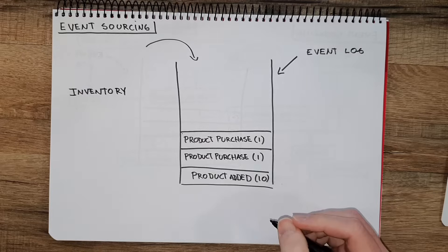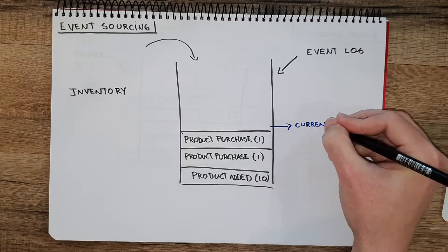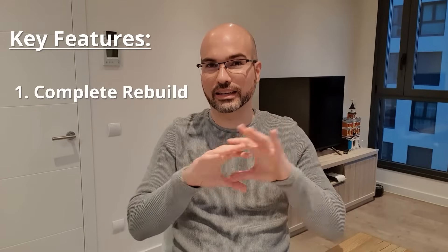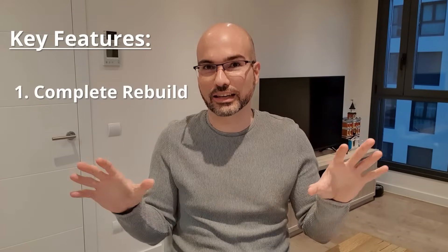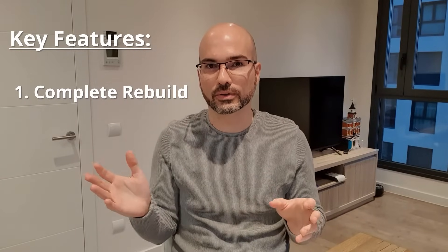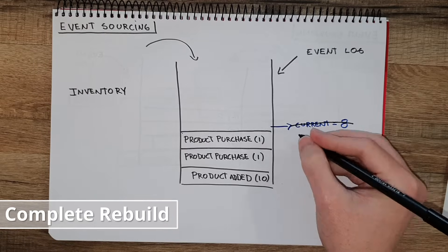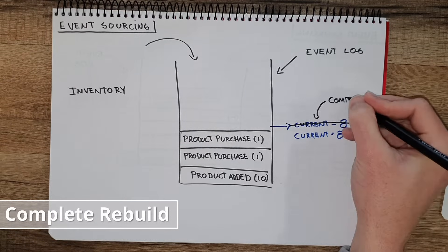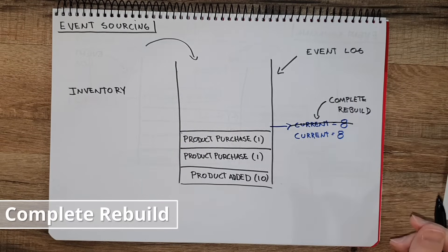We can get the current state of inventory at any point just by reading the event log. We know that at one point we added 10 products and then we started purchasing them — we purchased two — so we can calculate that currently the quantity of this product is eight. The important thing about event sourcing is that we can clear this state at any point, we can delete the number of products, but as long as we keep the event log, we can always calculate what is the current number of products in inventory.